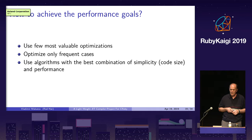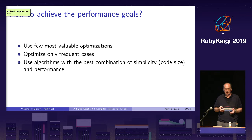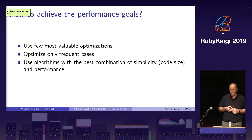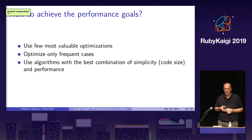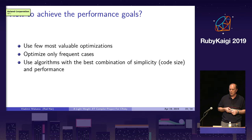I'd like not to have any external dependency for this project, and I will talk later about the actual results I have now. To achieve the performance goals: optimizing compilers are big and complex because they try to improve any code, including rare edge cases. Because they do a lot of things, compilation speed becomes very important. The compiler uses the fastest algorithms and data structures for compiled programs of different sizes, from tiny ones to huge ones, and usually these algorithms and data structures are very complicated. So to achieve our goals, we need to use the few most valuable optimizations, optimize only frequent cases, and use algorithms with the best combination of simplicity and performance.